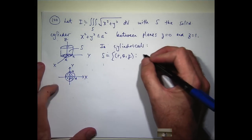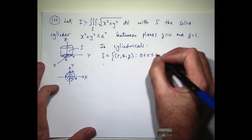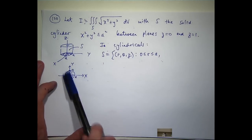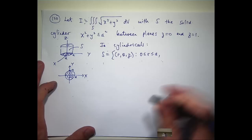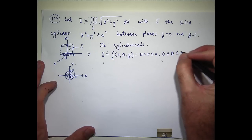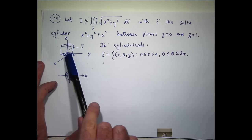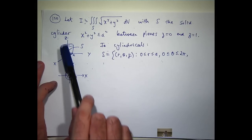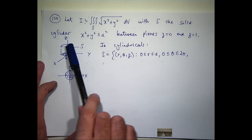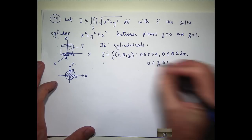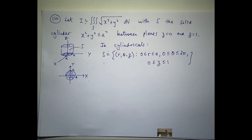Well, r is between 0 and a, where a is just some constant. To trace this out, theta is going to be between 0 and 2 pi. And what are the surfaces bounding our z? 0, just constants, 0 and 1. That's it.